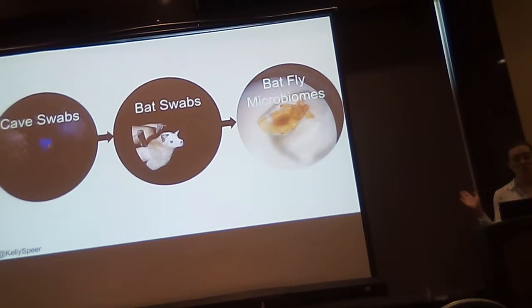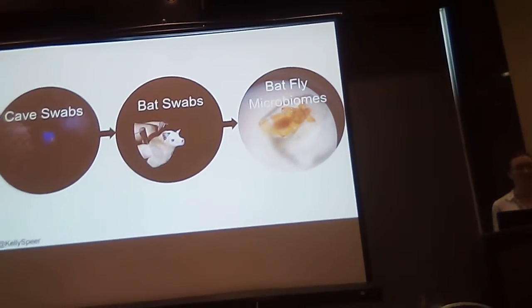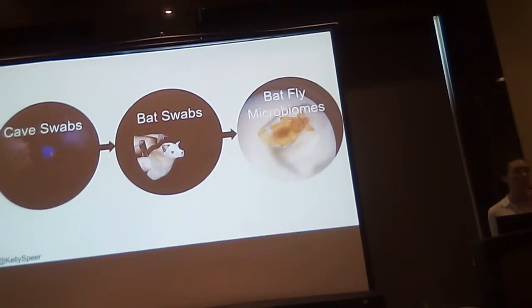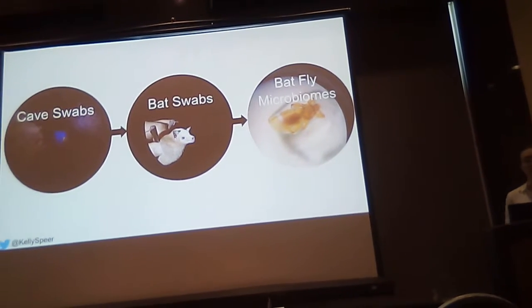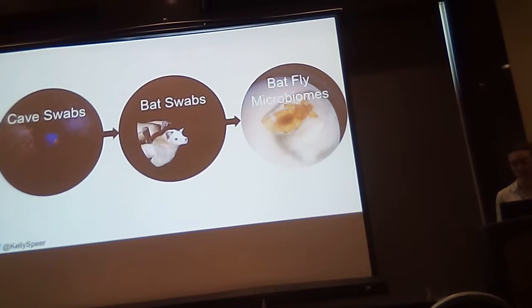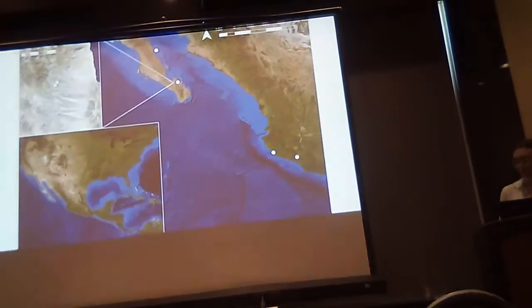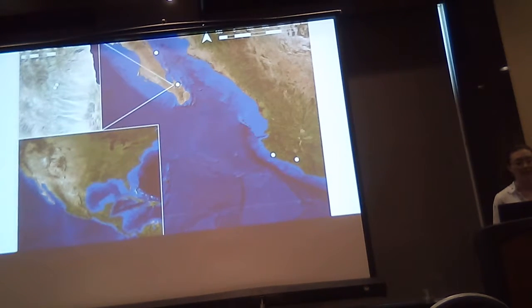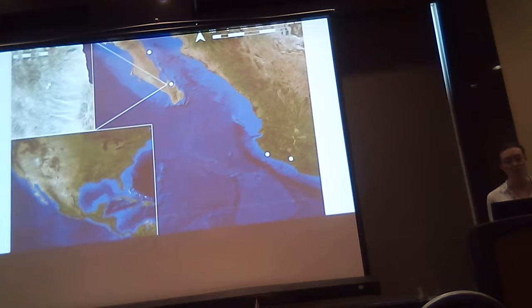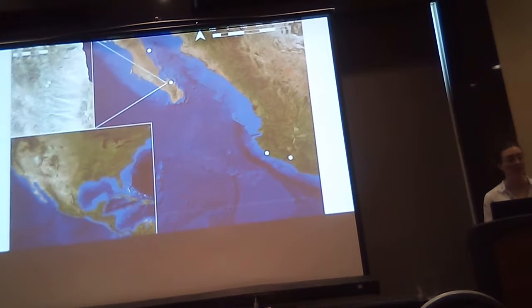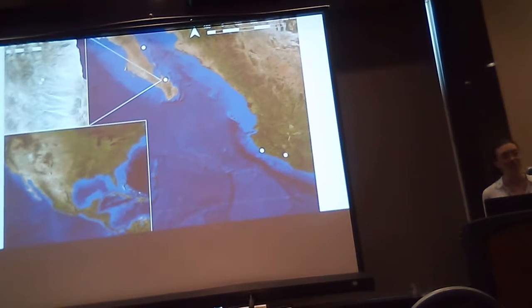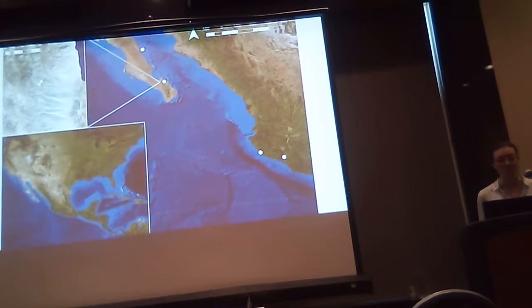I tried to dilute the external contaminants by washing the flies before sequencing their microbiomes. I collected from five localities in Mexico, distributed in the Baja Peninsula and in the mainland. Two of the localities are very close together on the Baja Peninsula, giving us the opportunity to examine how geographic variation might contribute to variation in the microbiome.